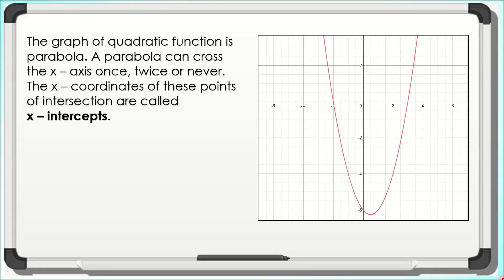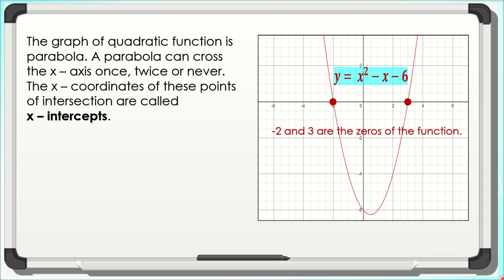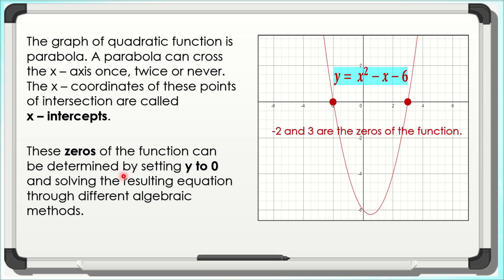The graph of a quadratic function is a parabola. A parabola can cross the x-axis once, twice, or never. The x-coordinates of these points of intersection are called x-intercepts. Consider the graph of y = x² − x − 6. The curve crosses the x-axis at 3 and negative 2, which are the x-intercepts. Similarly, 3 and negative 2 are the zeros of the function since these are the values of x when y is equal to 0. The zeros can be determined by setting y to 0 and solving through different algebraic methods.